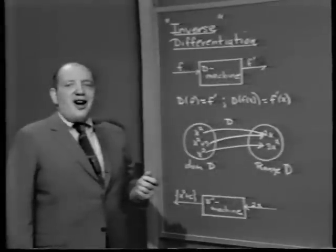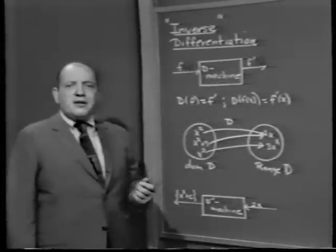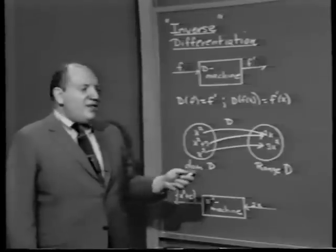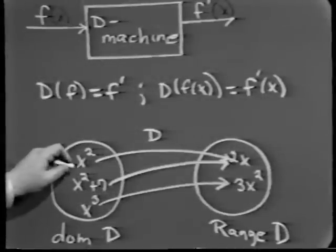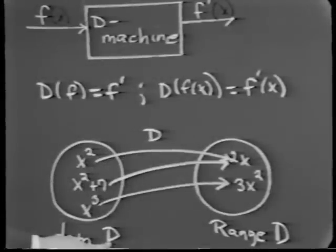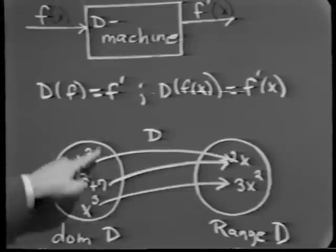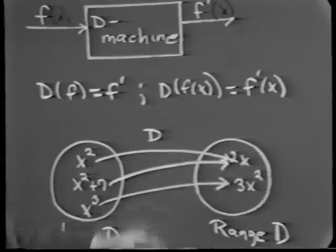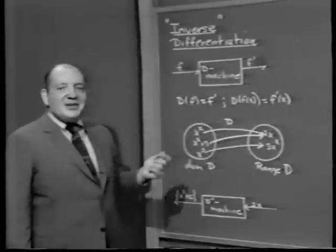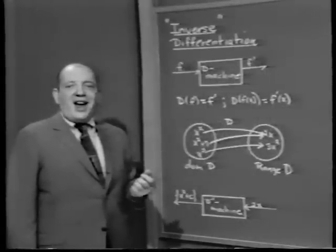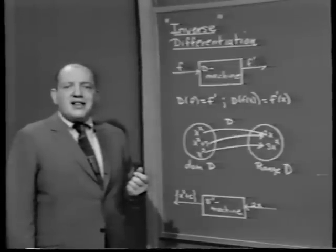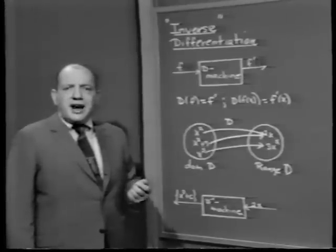Long before we dealt with functions of real variables, we discussed functions in general in terms of circle diagrams. We can think of our D machine as operating on a domain — the set of all differentiable functions — and its range or image is all functions which are derivatives of differentiable functions. Now, what kind of function is D? One-to-oneness and onto-ness are concepts that apply whenever we're dealing with any kind of function.